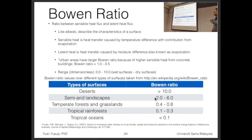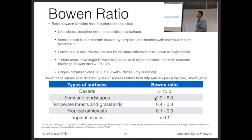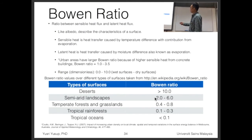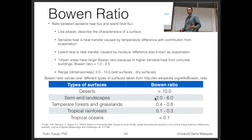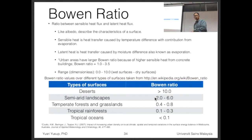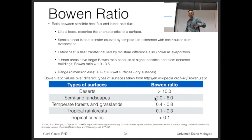Bowen ratio is the ratio between sensible heat to latent heat. Like albedo, Bowen ratio describes the characteristics of a surface. If the Bowen ratio is low, it means there is a high moisture content at or near the surface. If the Bowen ratio is high, there is low water content in the air. So Bowen ratio could be low over the ocean but high over a desert surface.